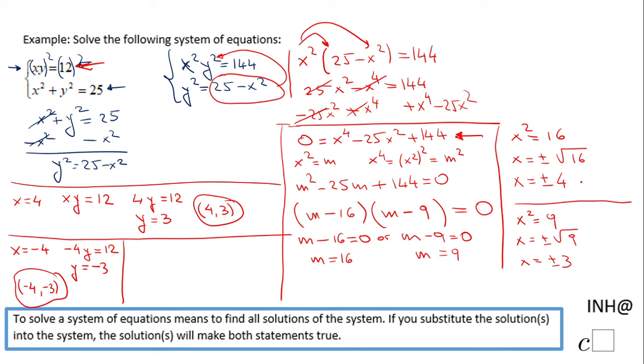We have these x values left. The same process: x equals positive 3, so we're going to have 3y equals 12, so we're going to get y equals 4.